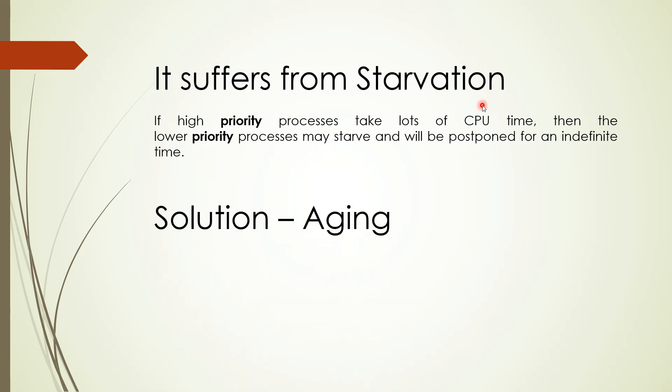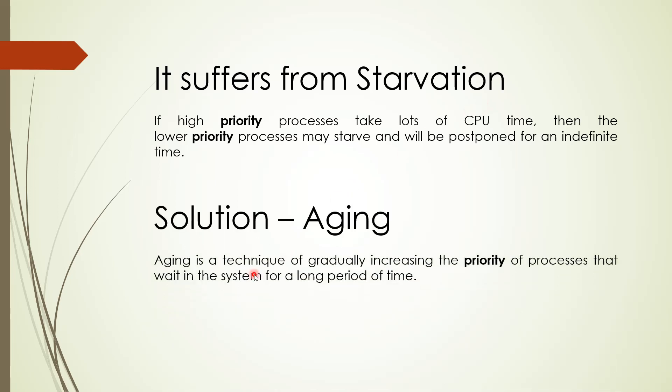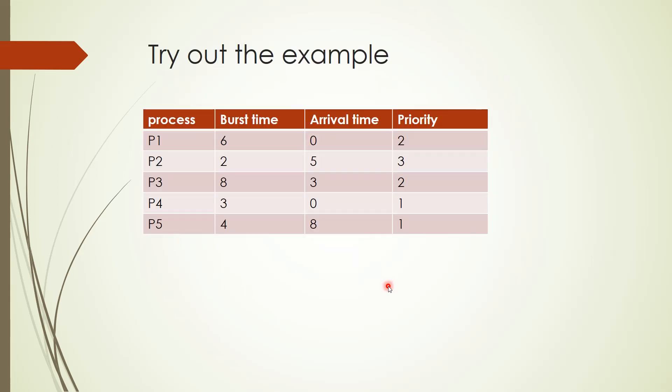The solution to starvation is aging. The aging technique gradually increases the priority of a process that waits in the system for a longer period of time. In the case of P4 waiting for a long duration, we increase the priority of P4 so that it will not keep waiting behind new higher-priority processes. That is about priority scheduling — now you can try out this example.